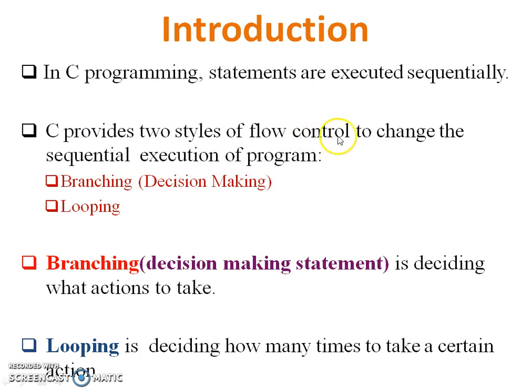C provides two styles of flow control to change the sequential execution of the program. First one is branching or decision-making. Branching means deciding what action to take on a particular sequence of statements. Looping is deciding how many times to take a certain action.